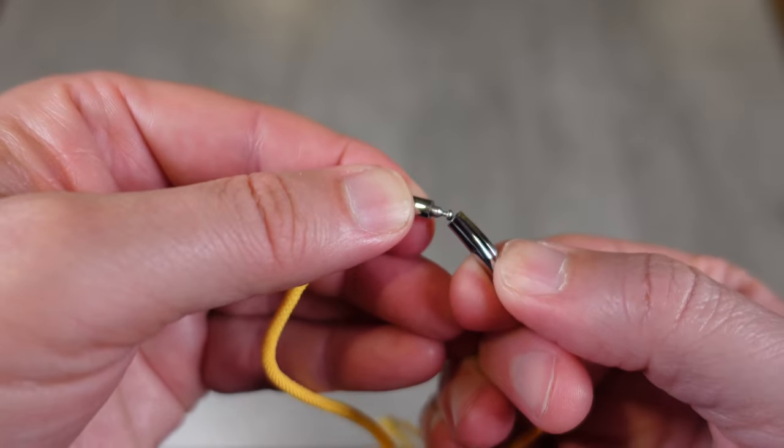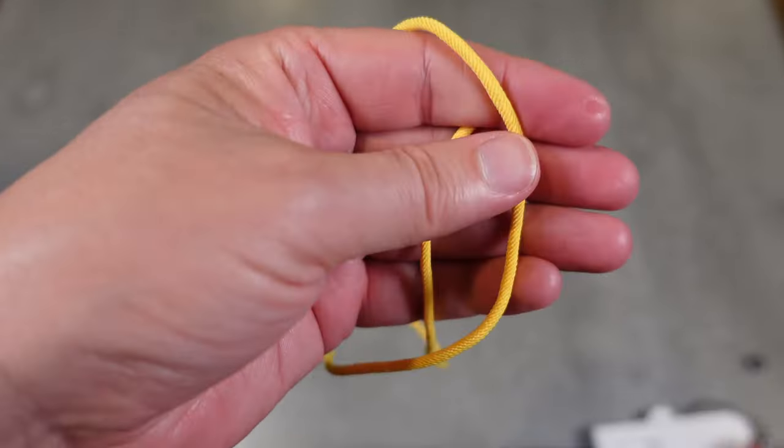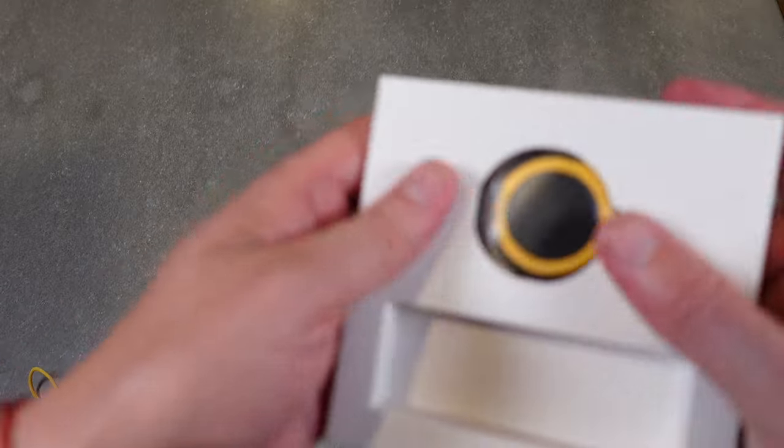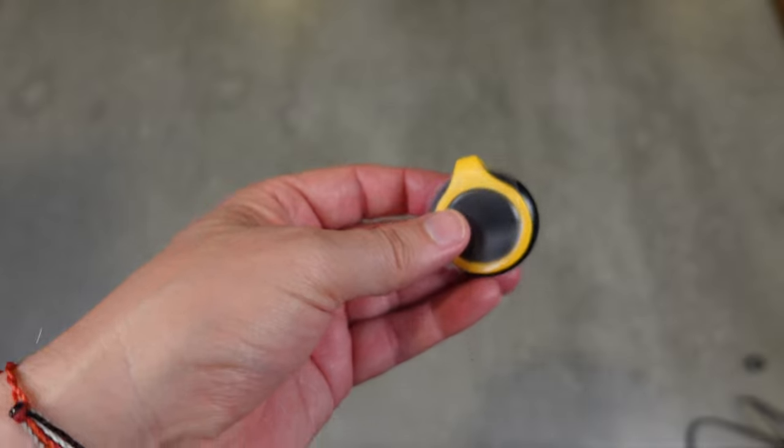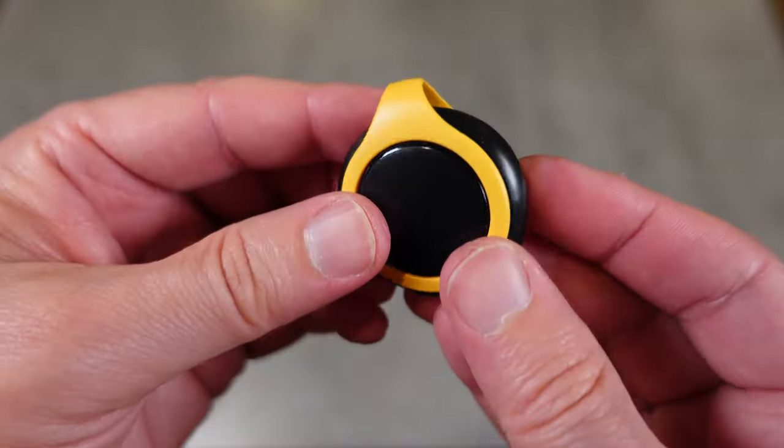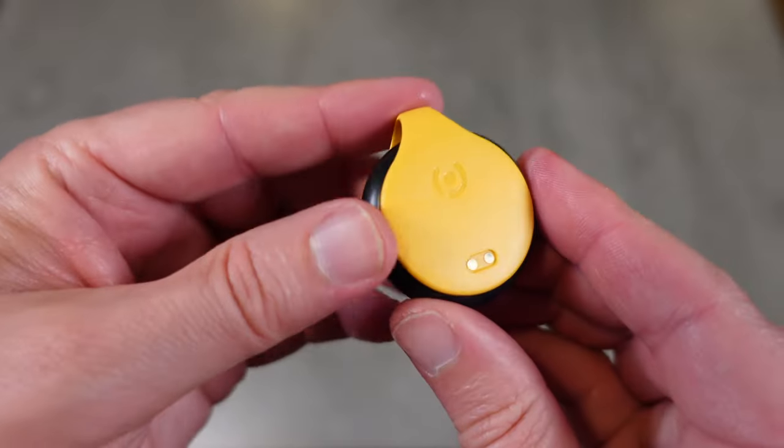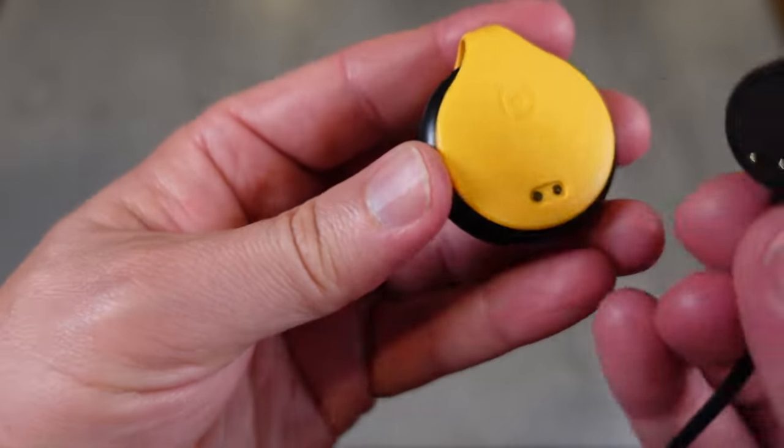Let's pull it out. It has a nice protective cover on it, and this is the device itself - nice simple device. You can see the two prongs where when you want to charge it, it just goes right on there.